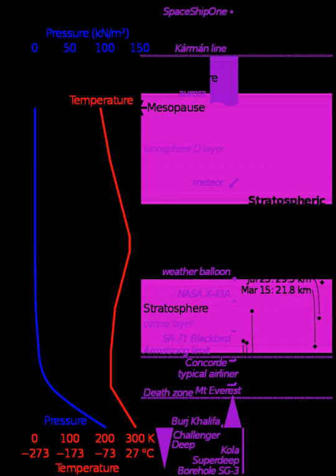The ISA model is based on average conditions at mid-latitudes, as determined by the ISO's TC20, SC6 Technical Committee. It has been revised from time to time since the middle of the 20th century.